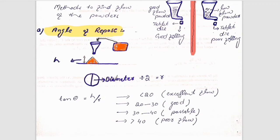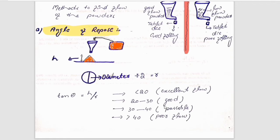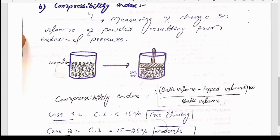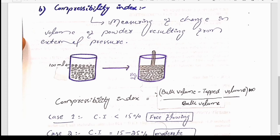If the angle value is less than 20°, there is excellent flow. If the angle is between 20° and 30°, the powder has good flow property. If the angle value is between 30° and 40°, the flow is passable. If the angle value is more than 40°, the powder has poor flow. So we can decide whether the powder has good, poor, or excellent flow.